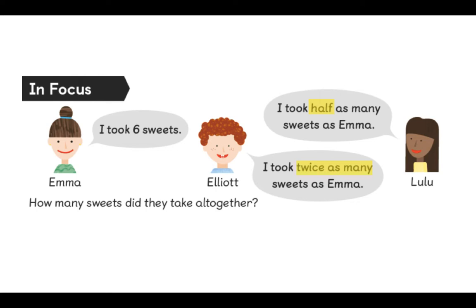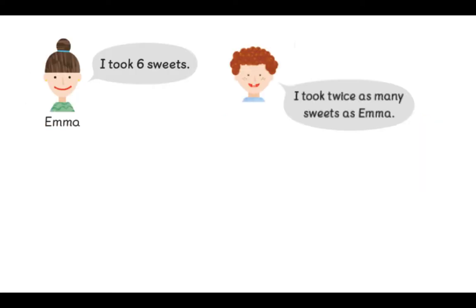Pause the video. Can you remember what it means to half an amount? Can you remember what it means to find twice as many, to find double? Well done. Let's start by finding out how many sweets Elliot took. We know Emma took six sweets. And Elliot took twice as many. I wonder if you can work out how many Elliot took. Pause the video and see if you can write a number sentence and prove it with a picture.